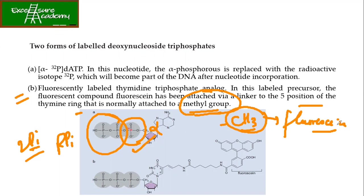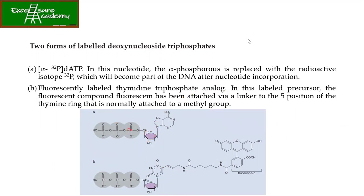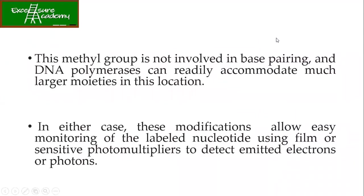So this is your fluorescent base. You can see the structure — you have got your gamma, beta, and alpha phosphates, this is your ribose, this is your thymine. And now instead of having your methyl group, you are having a fluorescent molecule. This can be incorporated and used in this assay. This methyl group is not involved in base pairing, and DNA polymerase can readily accommodate much larger moieties in this location — isi vajah se we are able to use this as the modified analog.